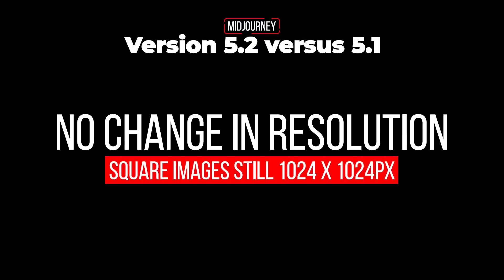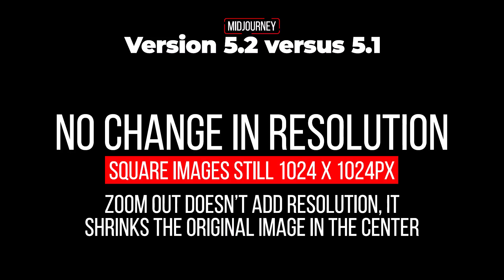There's no change in image resolution with 5.2 compared to the previous version — a square image is still about 1024 by 1024 pixels, varying depending on aspect ratio. Zooming out doesn't add resolution; it just shrinks the original image into the center and produces the same size image as before. This means you'll lose detail in the center area, so you may need to combine it in Photoshop if you want to keep that center part at full resolution.